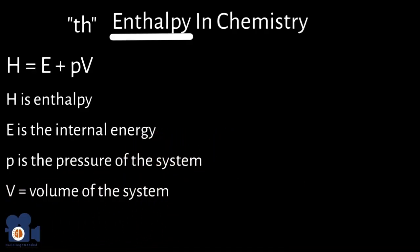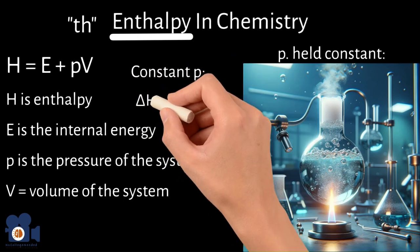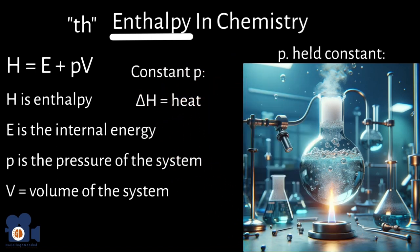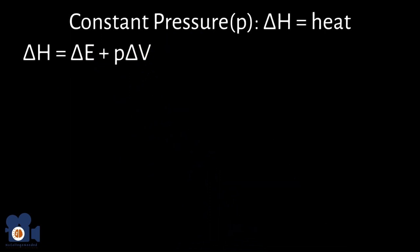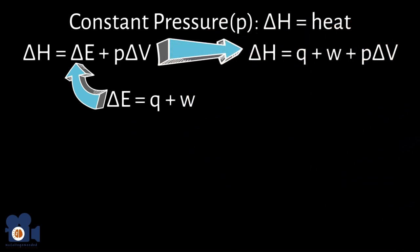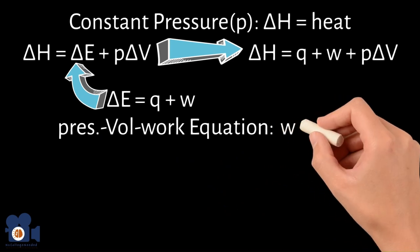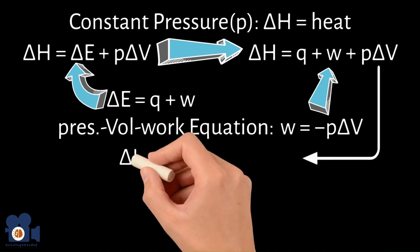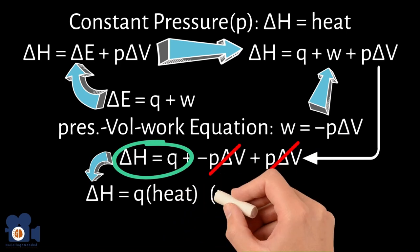Enthalpy is particularly useful when pressure is held constant, such as in many chemical reactions in open laboratory containers. Under constant pressure, ΔH equals the heat absorbed or released by the system. We can prove this: the equation at constant pressure is ΔH = ΔE + PΔV. Substituting ΔE = Q + W and using the pressure-volume work equation W = −PΔV, the PΔV terms cancel and we get ΔH = Q. So the change in enthalpy equals heat — but only when pressure is constant.